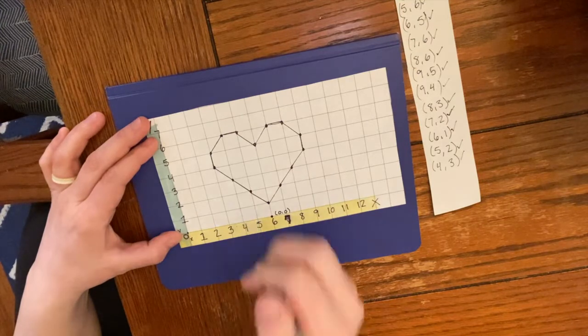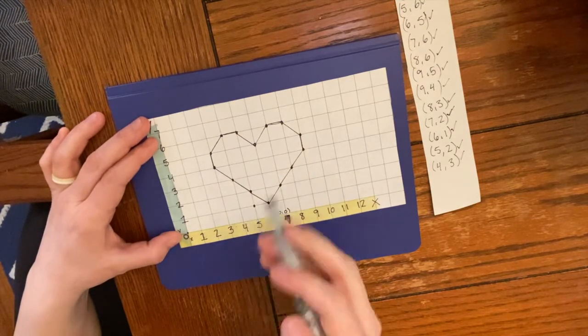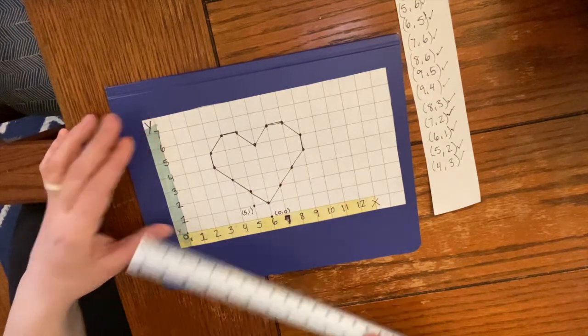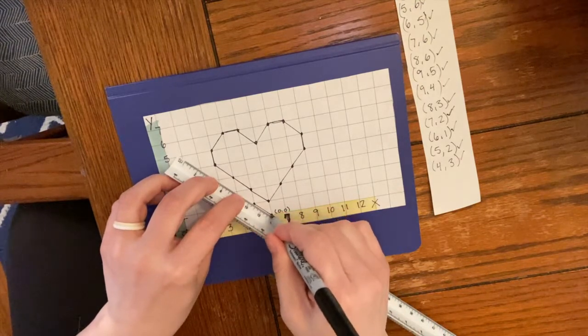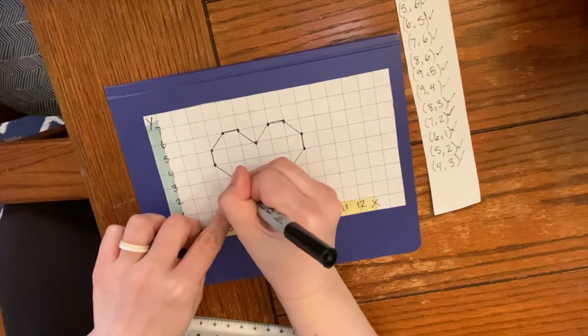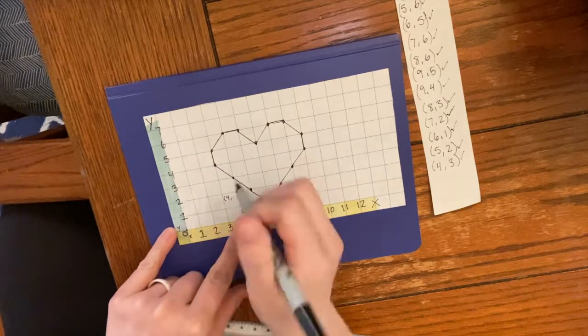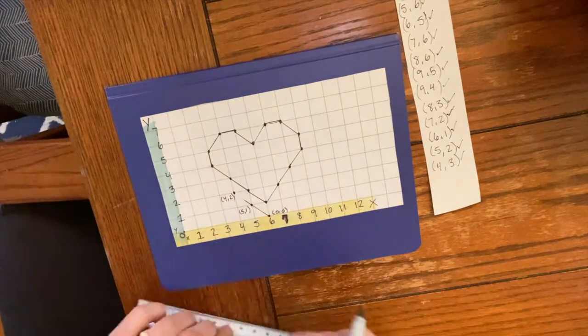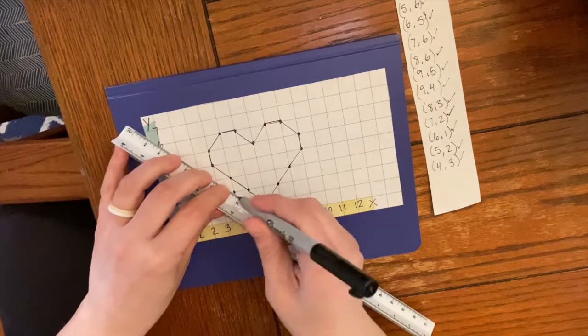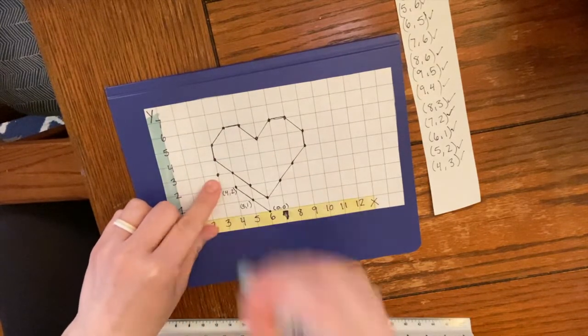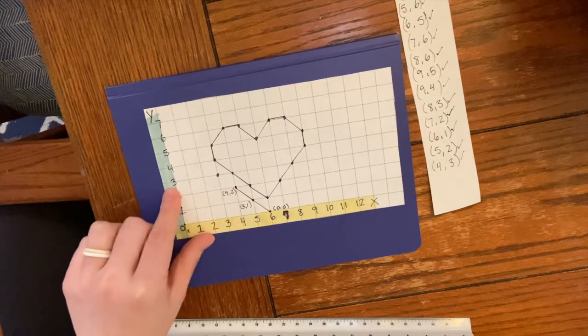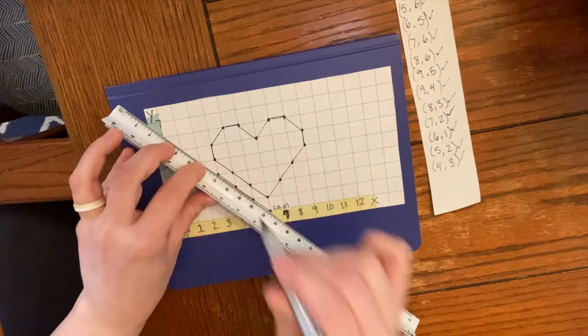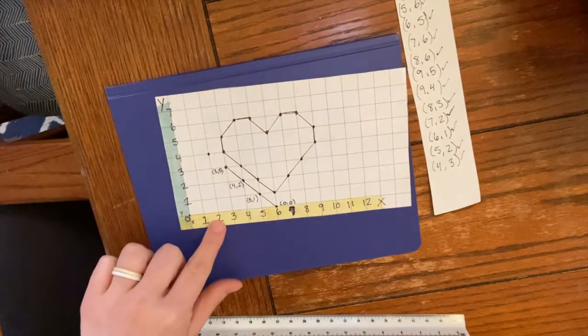Now I'm going to go up here, put a dot right here. This is 5 on the x-axis and 1 on the y-axis. And this one is 4 on the x-axis and 2 on the y. See how the x always goes first. Let's see, 3 on the x and 3 on the y. Let me go here, so this is 2 on the x-axis and 4 on the y-axis.